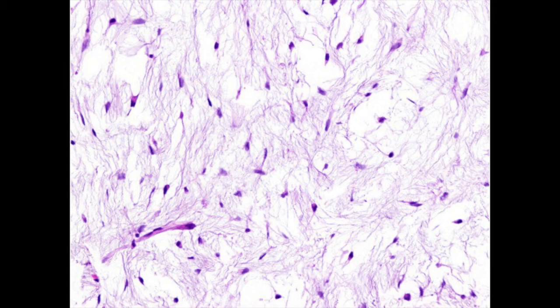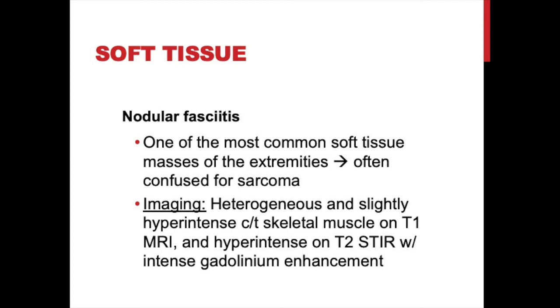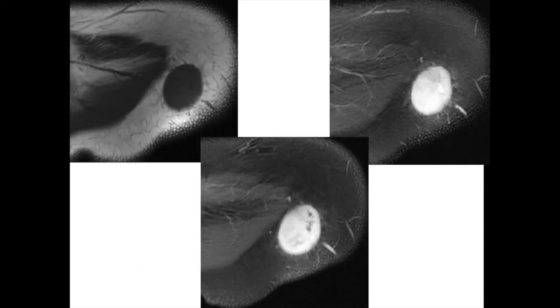Nodular fasciitis is one of the most common soft tissue masses of the extremities, often confused for infection or sarcoma because it can grow rapidly, be very painful, erythematous, and look aggressive on imaging. However, it is completely benign. It is very heterogeneous but slightly hyper-intense compared to skeletal muscle on T1 and hyper-intense on T2 with intense gadolinium enhancement. Here it is in the subcutaneous tissues of a shoulder — heterogeneous, low signal on T1, bright on T2, but post-gadolinium shows central areas without uptake that can mimic a sarcoma with necrosis.